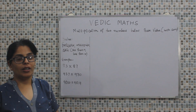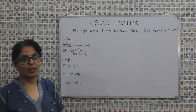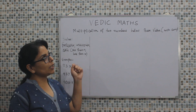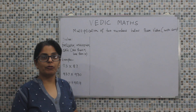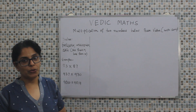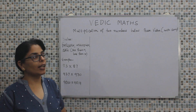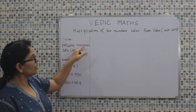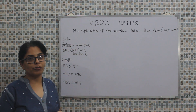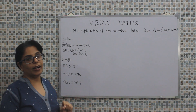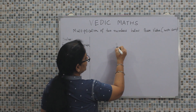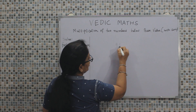Hello viewers, in this particular discussion, we will be talking about multiplication using the concept of Vedic Math. The sutra that will be used in this particular calculation will be Nikhilam Navatashcharamam Dashatah, which means all from 9 and last from 10. Now, let's look into this particular example.